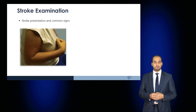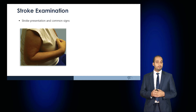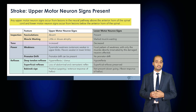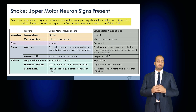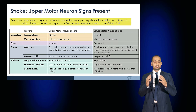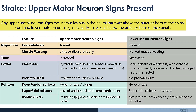When examining a patient with a stroke, let's think about the common signs we're likely to elicit. A stroke results in upper motor neuron signs because the disturbance in the neural pathway is proximal to the anterior horn of the spinal cord. We would not expect fasciculations or marked wasting, but disuse atrophy. We would expect an increase in tone and a pyramidal pattern of weakness, meaning the extensors are likely weaker in the upper limbs and the flexors weaker in the lower limbs.